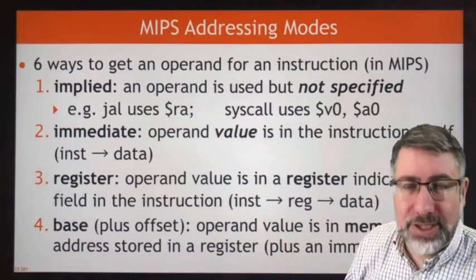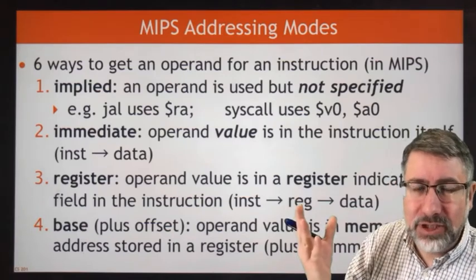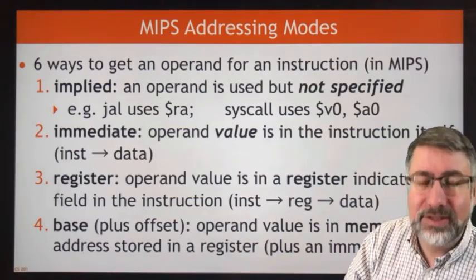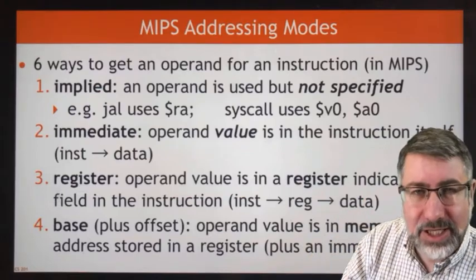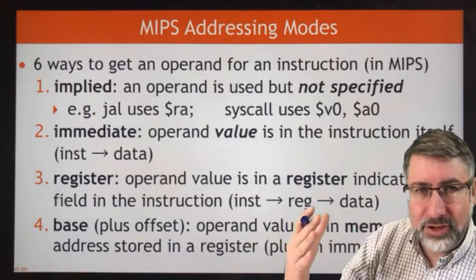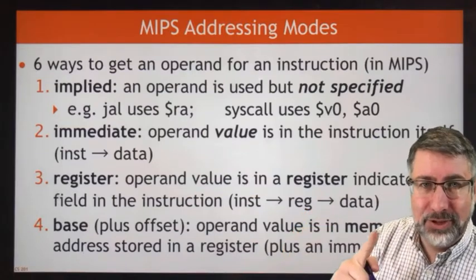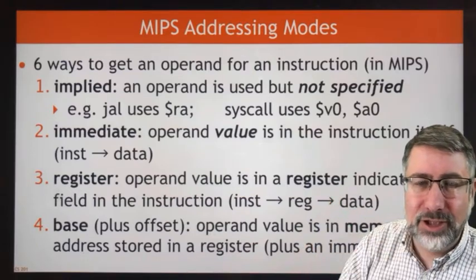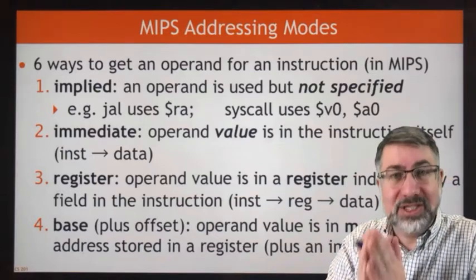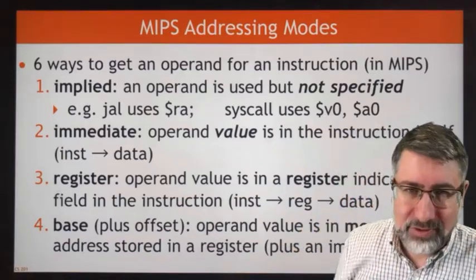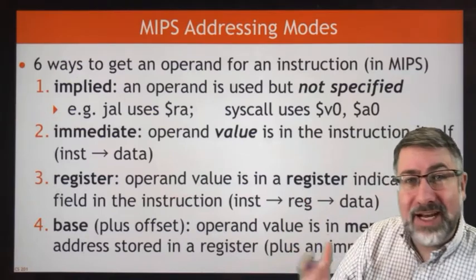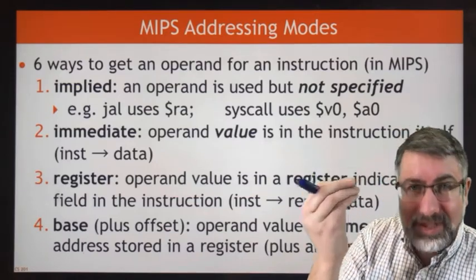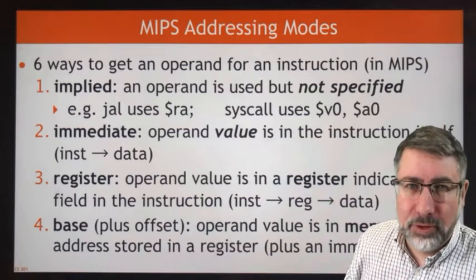The third addressing mode is called register addressing. This means the value we're interested in is in the register file, and the specification for where to find it shows up in the instruction. There is one level of translation: the instruction is used to look up information in the register file, which then is the data we're interested in. Instructions can have more than one addressing mode — a regular I-format instruction has both immediate addressing and register addressing.